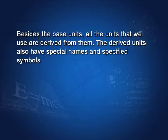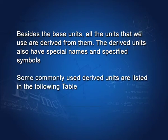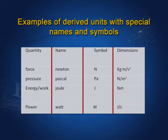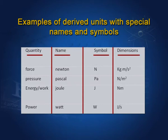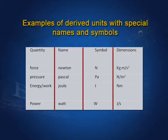Besides the base units, all the units that we use are derived from them. The derived units also have special names and specified symbols. Some commonly used derived units are listed in the following table. The first column is quantity, the second is the name of the unit, the third is the symbol, and the fourth is the dimensions. I have listed only those quantities used in mechanics. When we come to electricity, we will introduce other quantities also.